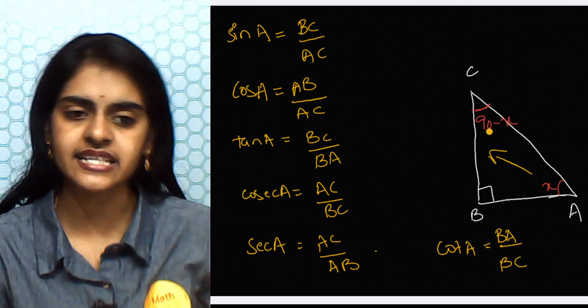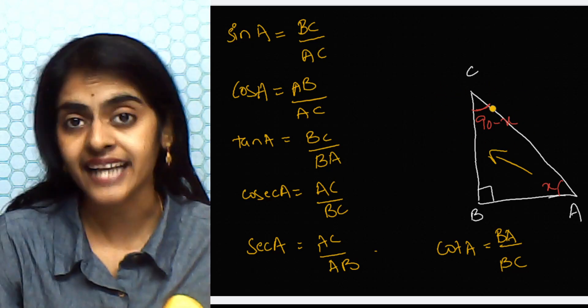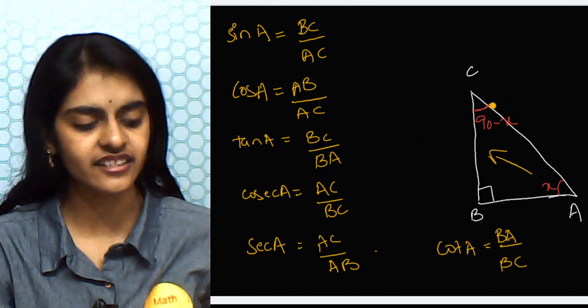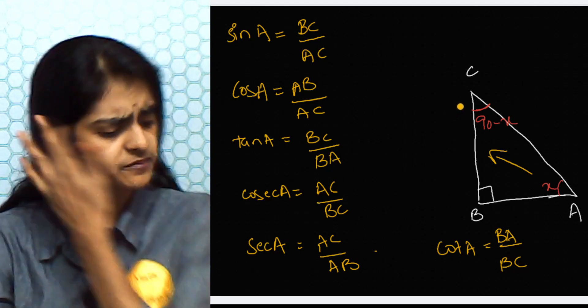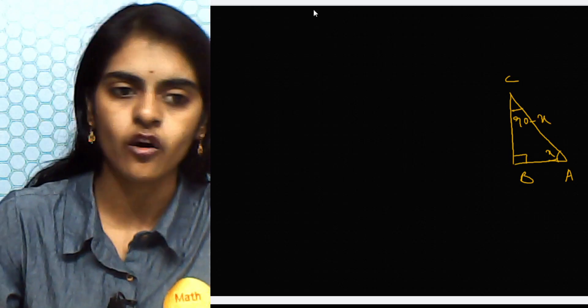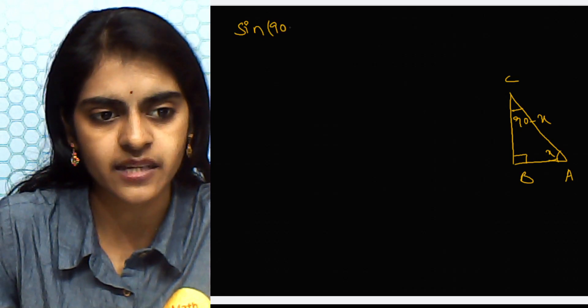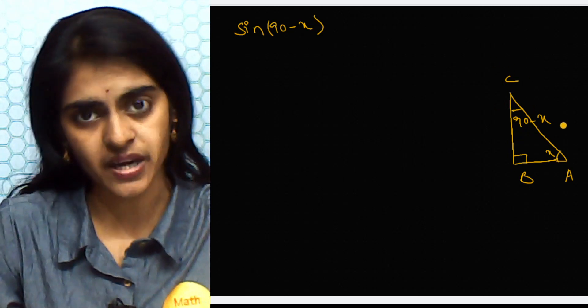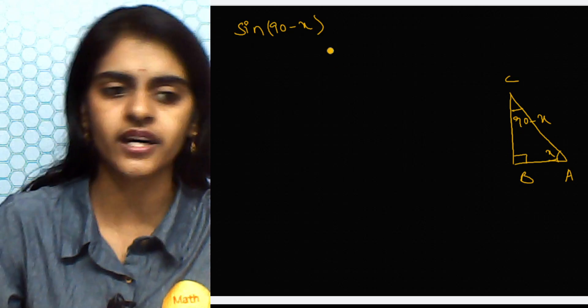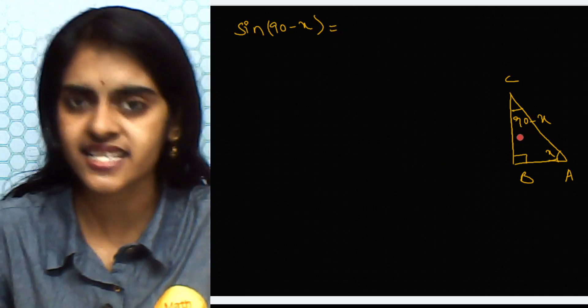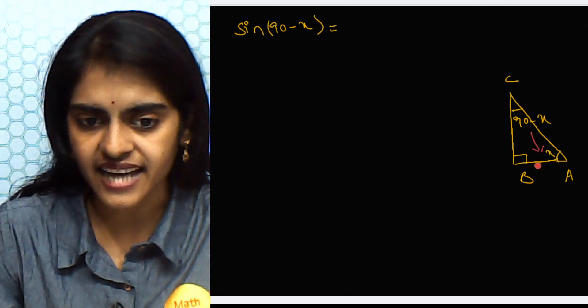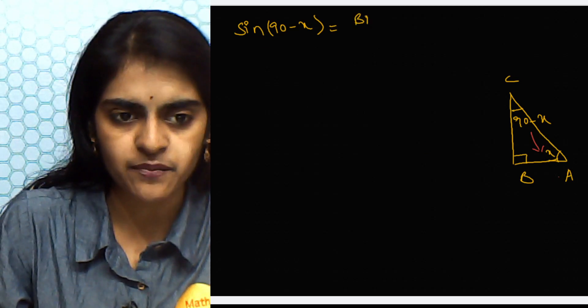Now let us write the trigonometric ratios for angle C, which measures 90° − x. In triangle ABC, angle x is at A, the right angle is at B, and angle C = 90° − x. For sin(90° − x): sine is opposite over hypotenuse, and the opposite side of angle C is BA, so sin(90° − x) = BA/AC.